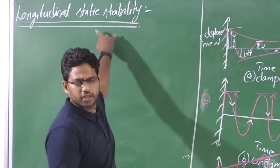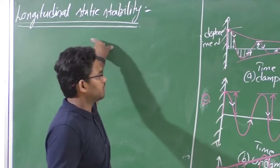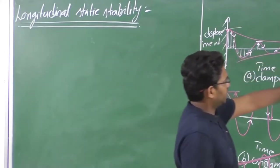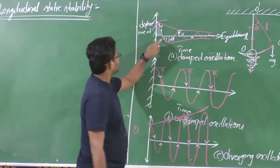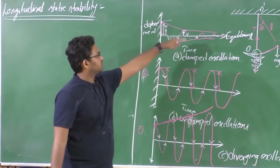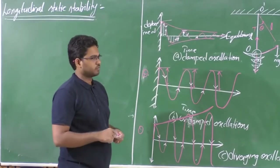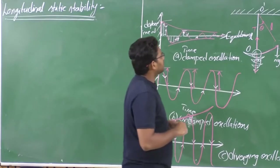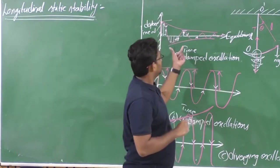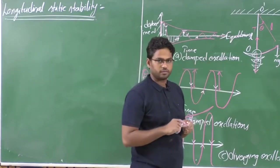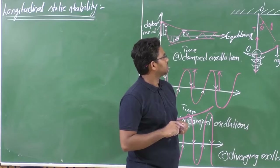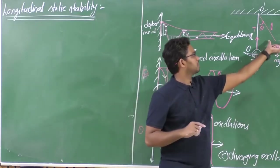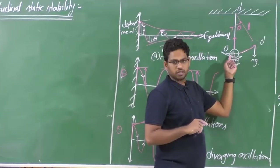Just before proceeding to the aircraft, let us look at this setup carefully. What is making the system come back towards equilibrium? Or what is helping this system to have stability? Can we say something about that? Who is helping this pendulum to come back towards its initial equilibrium?